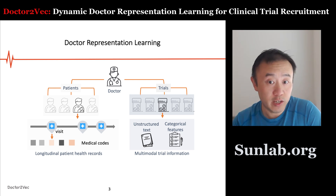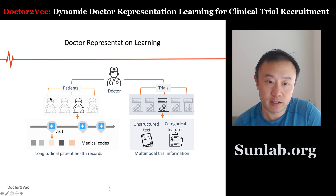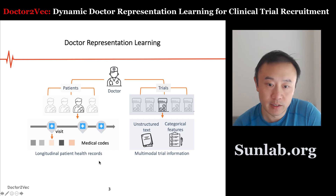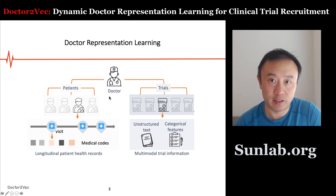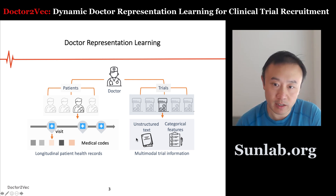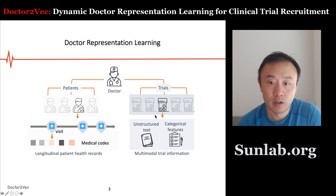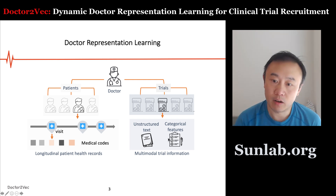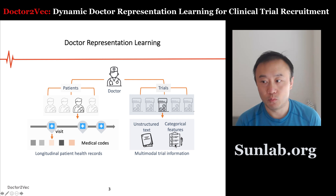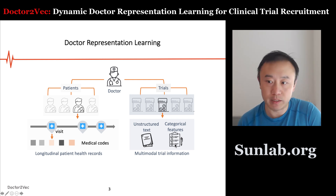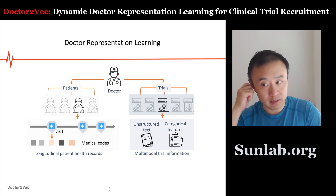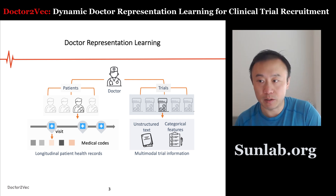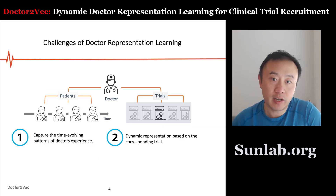So it's important to model doctors for clinical trial site selection. The way we approach this problem is we represent a doctor as a collection of the patients visiting that doctor, as well as other information such as the doctor's specialty, location, experience, and years of practice. On the other side, we match to trials — a trial has some unstructured text description and also categorical features such as disease, phase of the trial, pharmaceutical company, and intervention mechanism.